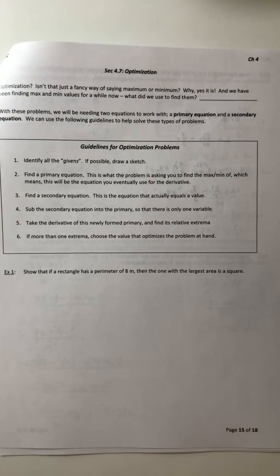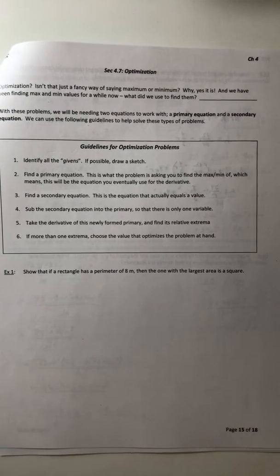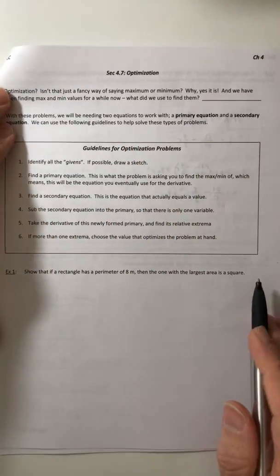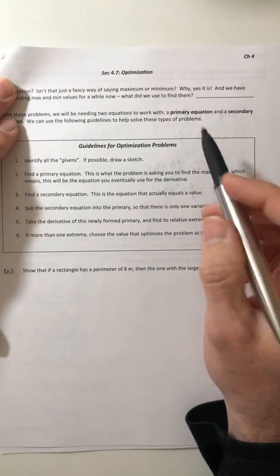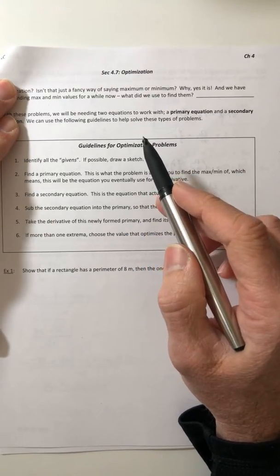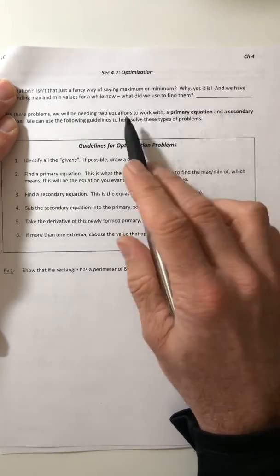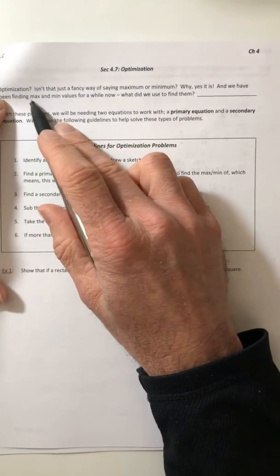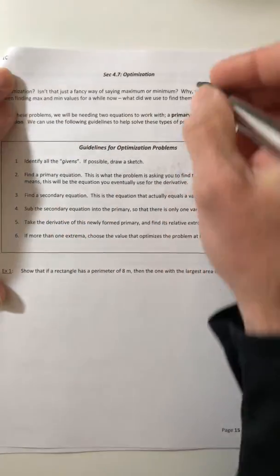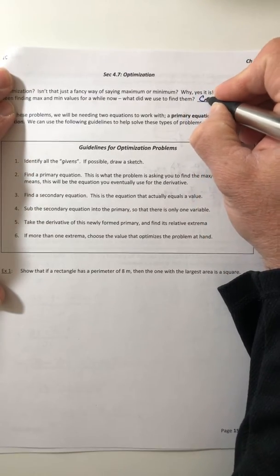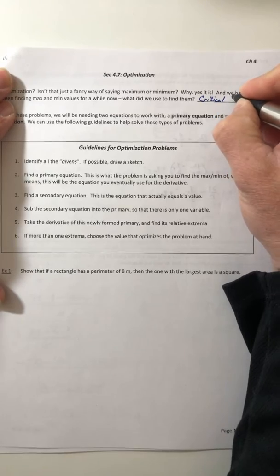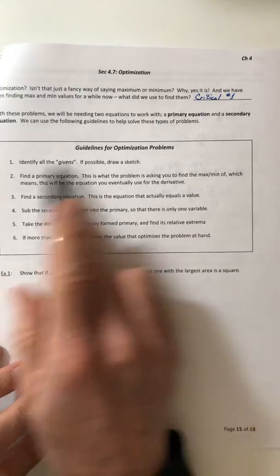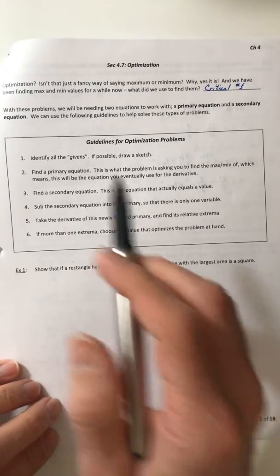Maximum and minimums we've been finding for quite a while now, at least since section 4.1, with absolute mins and maxes. Whether it was absolute or relative, we've been using critical numbers to find them. So we're going to be doing the same thing for these types of problems.